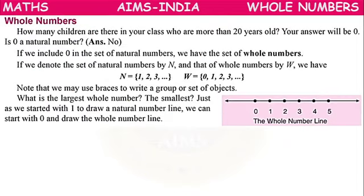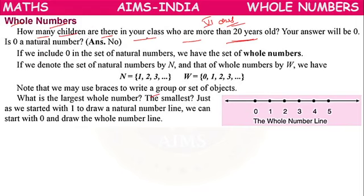Next, whole numbers. Suppose you have a question: how many children are there in your class who are more than 20 years old? Your answer will be 0, because 6th class children are around 10 to 12 years old. Since none are more than 20, our answer will be 0.